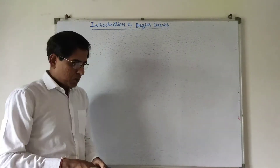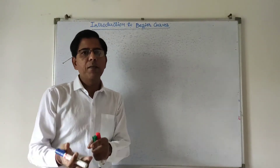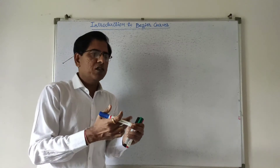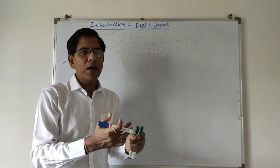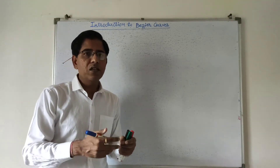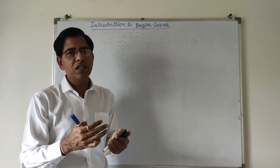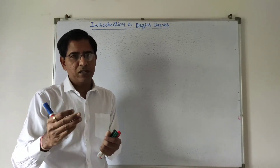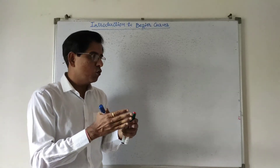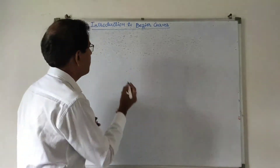Curves are of two types: two-dimensional curves and three-dimensional curves. Three-dimensional curves are also called space curves. In a two-dimensional curve, only x and y values change throughout the curve, whereas in a three-dimensional curve, x, y, and z all three parameters keep changing and it travels into space, not constrained to a single plane. One important three-dimensional curve is the spline.